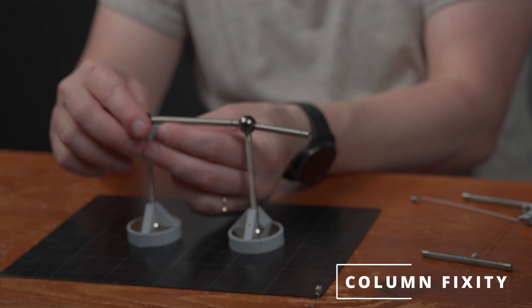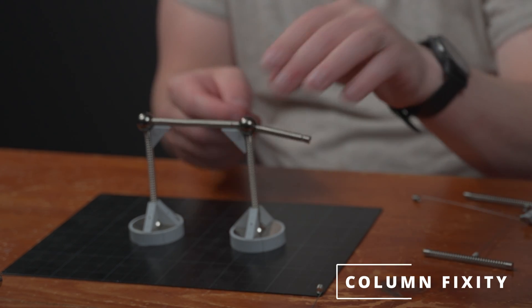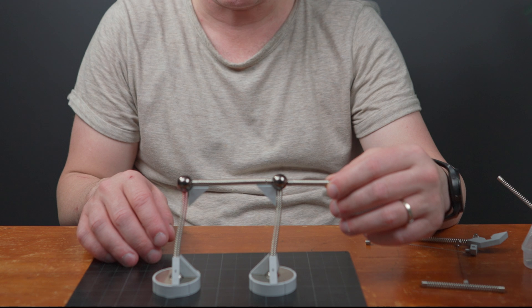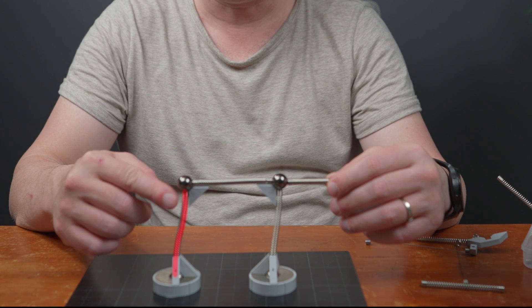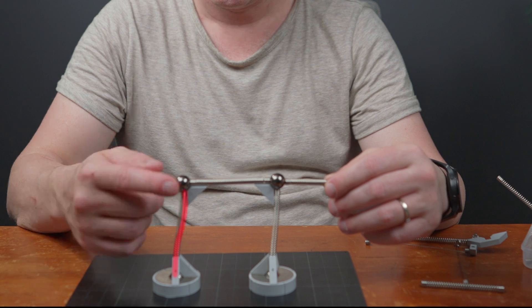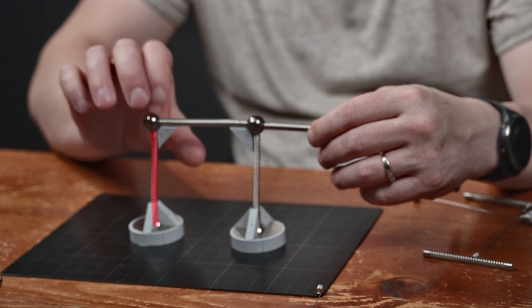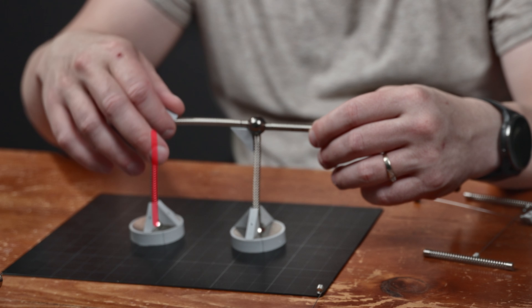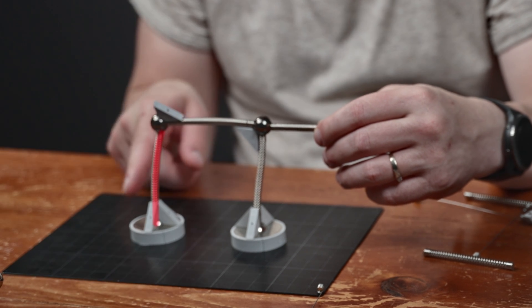But if we add fixity through the top through applying these fixed connections, we can see we've got a lot stiffer structure here when we apply the force. It's turning the system into an S-bend. But if we remove that stiffness it just bends in one way.